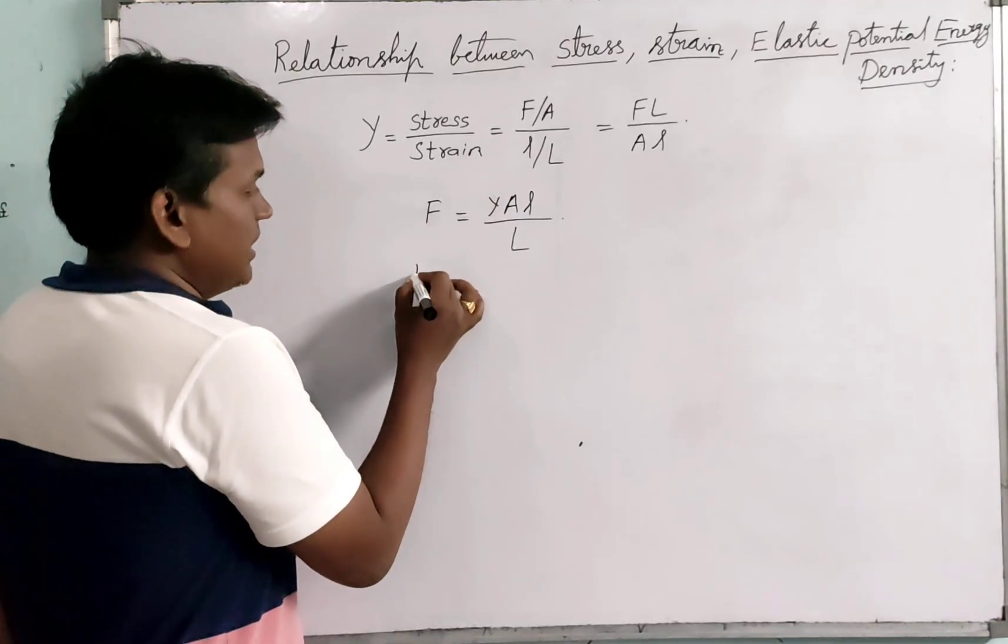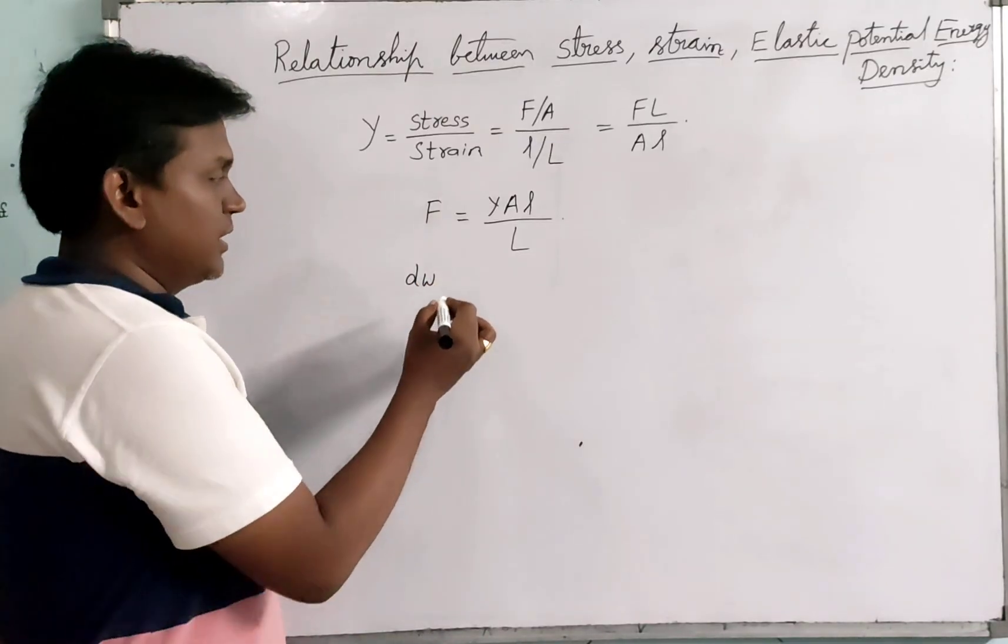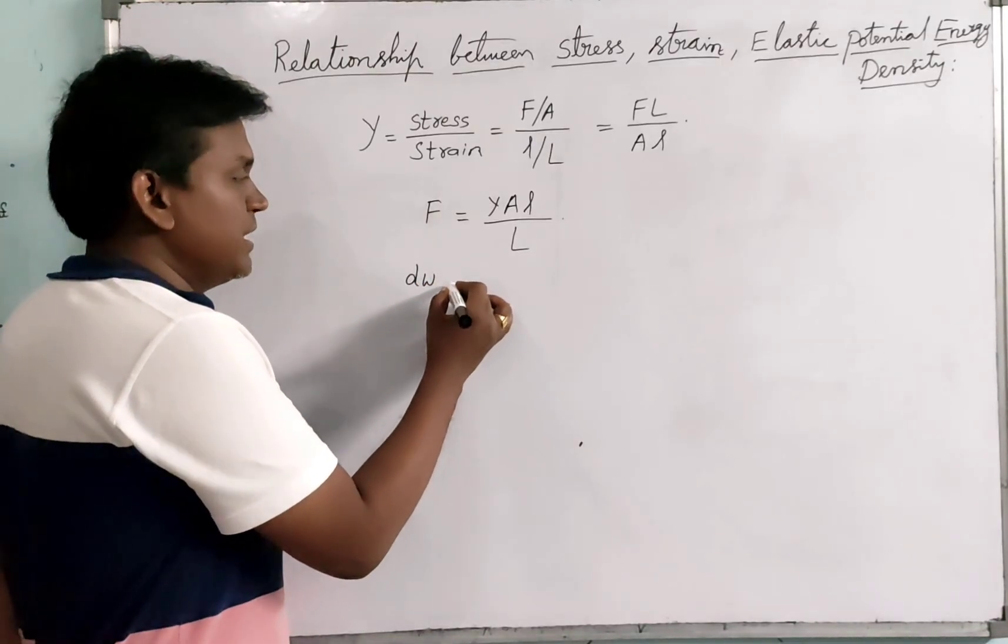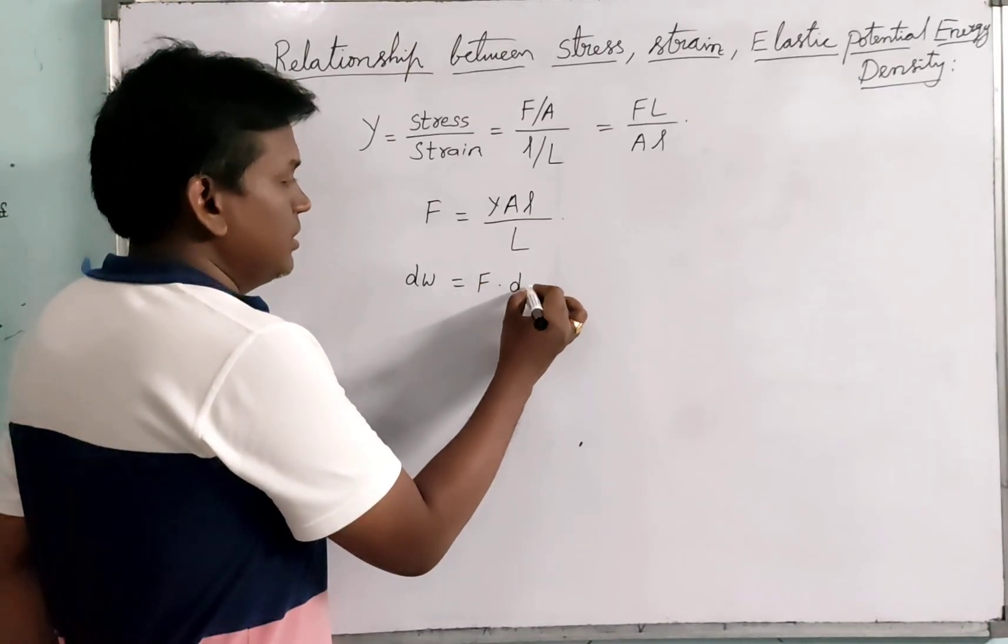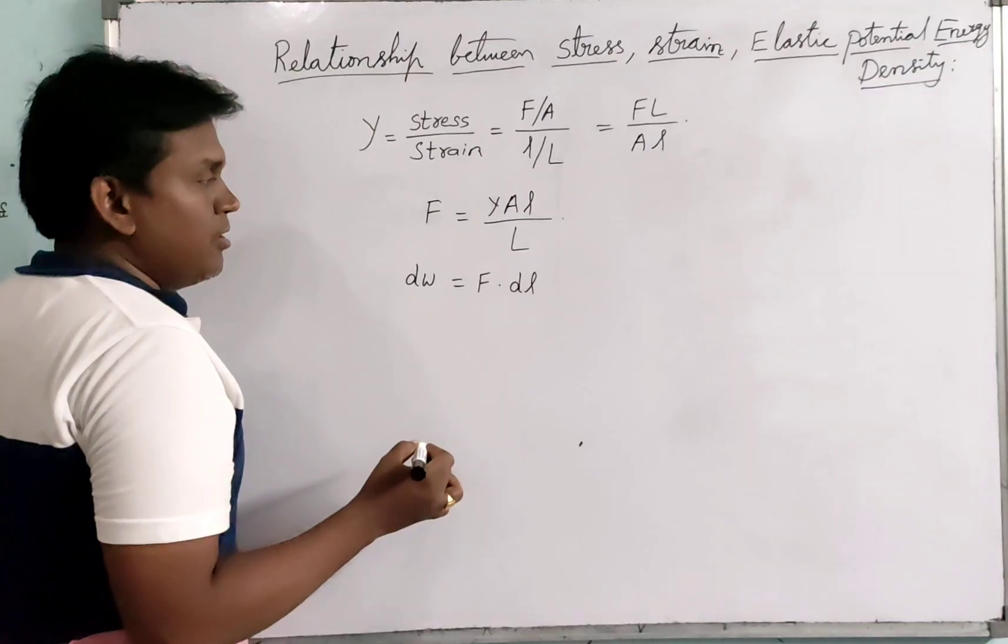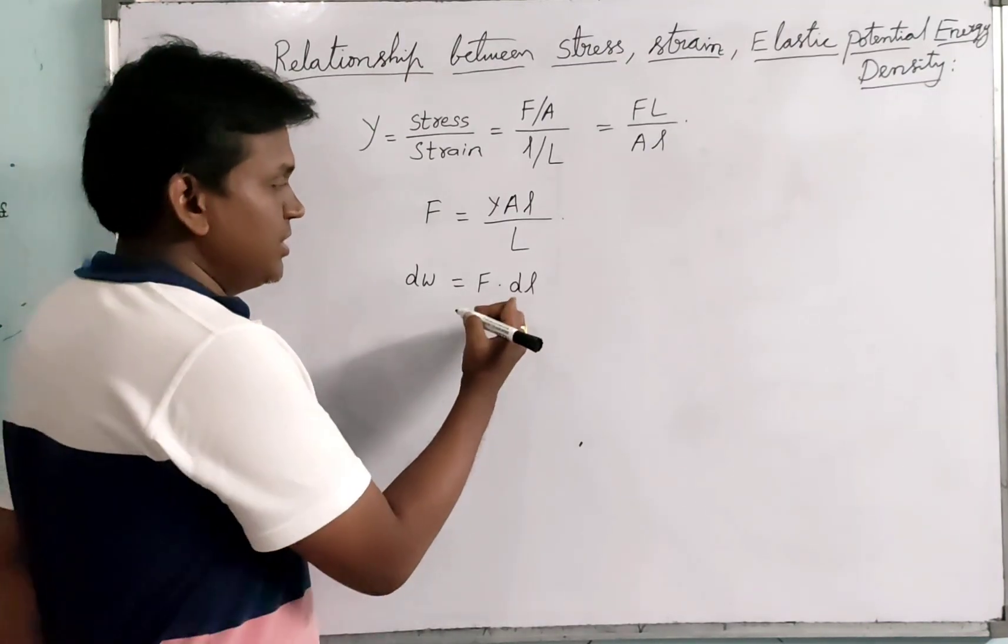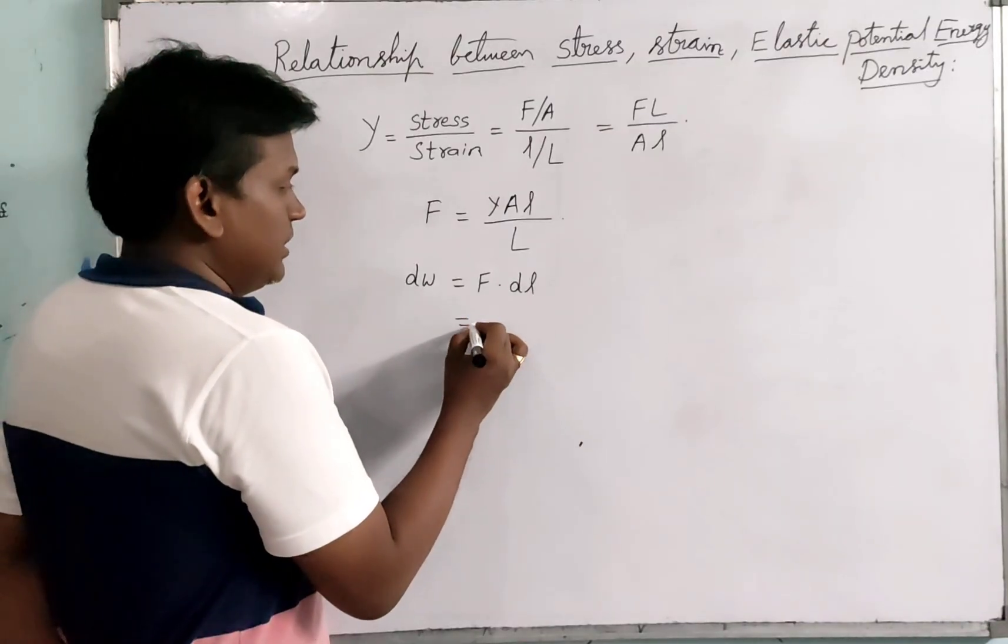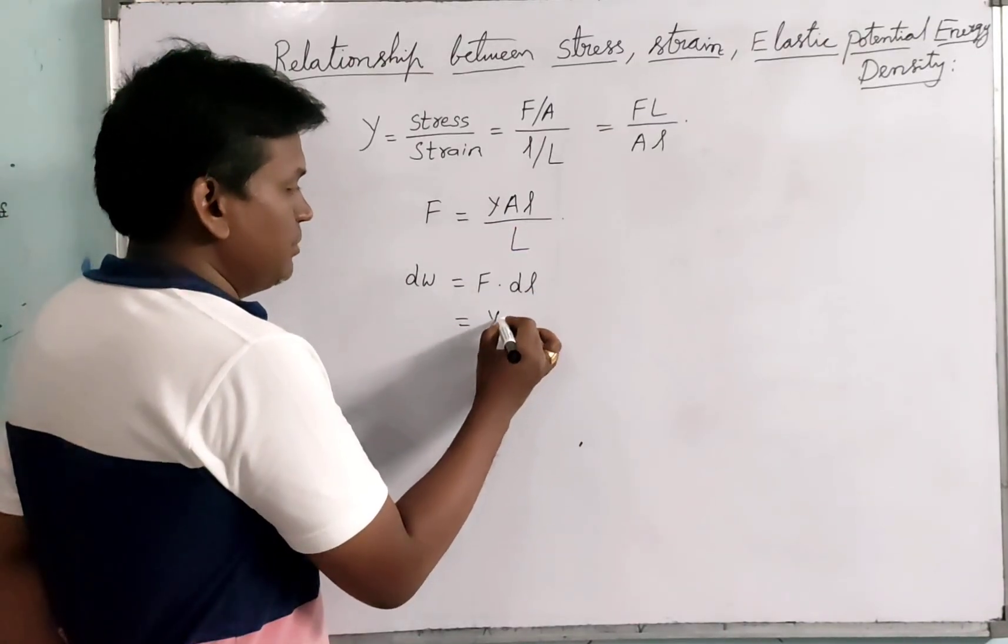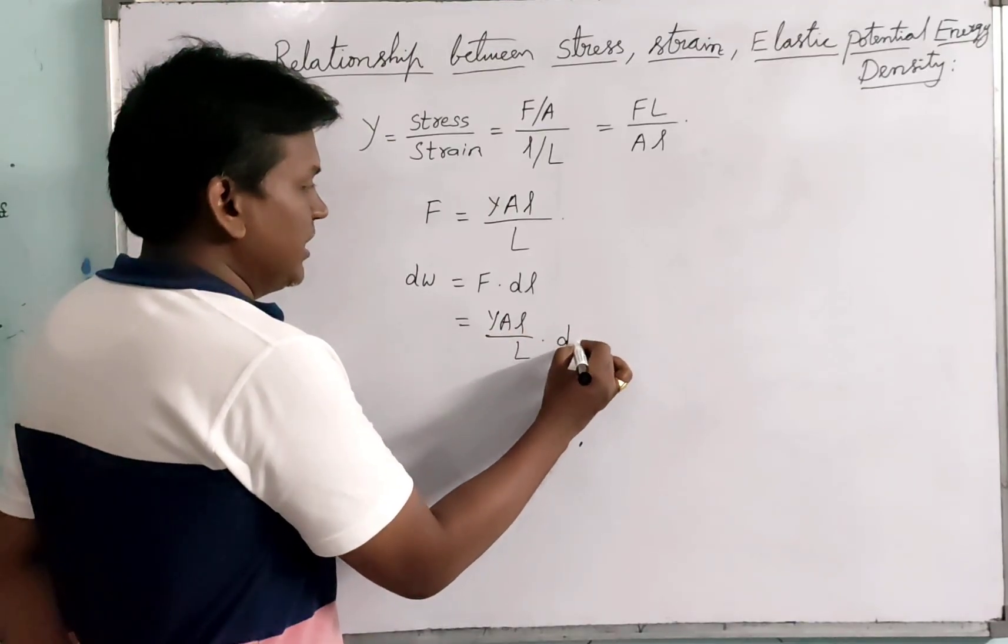If you consider the infinitesimally small work done, D double W equals F dot small elongation DL. Due to application of force, there is a small elongation DL. That is equal to F which is nothing but Y AL upon L into DL.